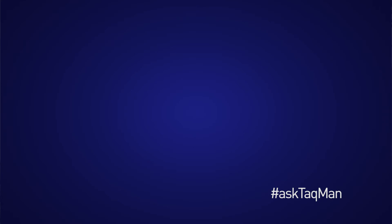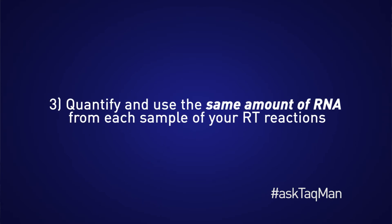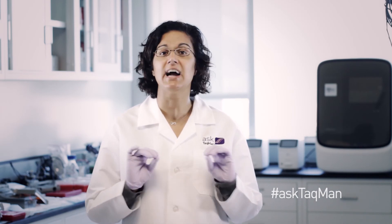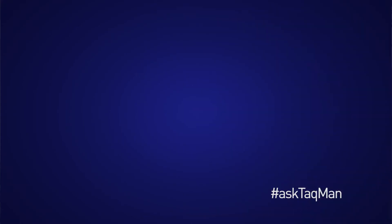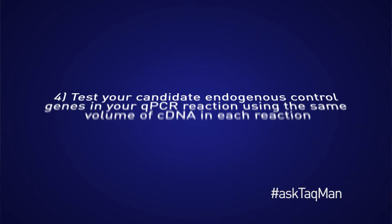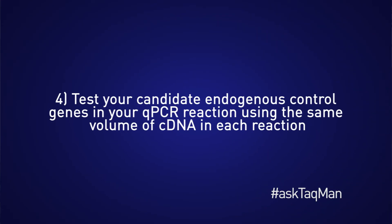Third, quantify and use the same amount of RNA from each sample. Since you will be validating your control gene, it is vital to keep template and reagent volumes consistent. Next, test your candidate endogenous control genes in your qPCR reaction using the same volume of cDNA in each reaction.